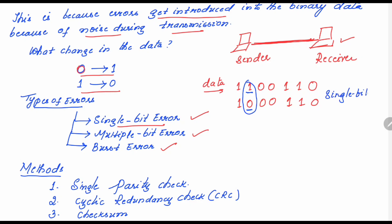If you observe: the sender sent 1 1 0 0 1 1 0 but the receiver received 1 0 0 0 1 1 0. The bit that was 1 at the sender side got changed to 0 during transmission. If only one bit gets changed during transmission, we call it a single bit error.